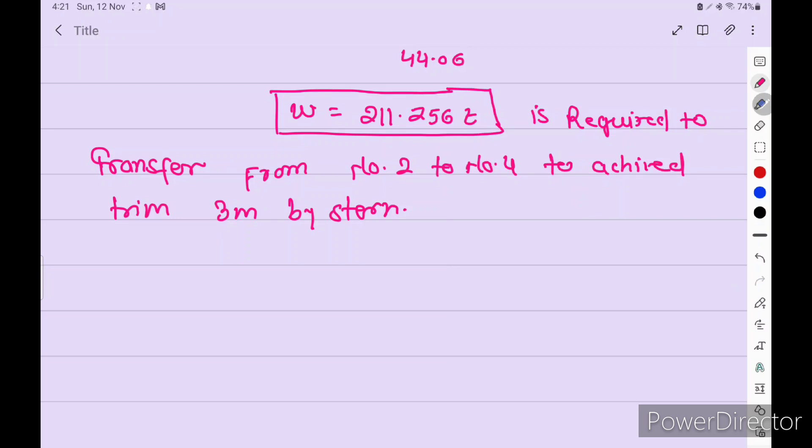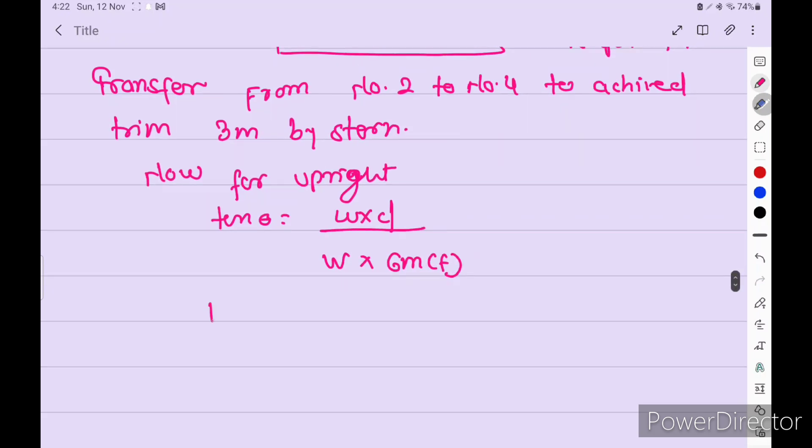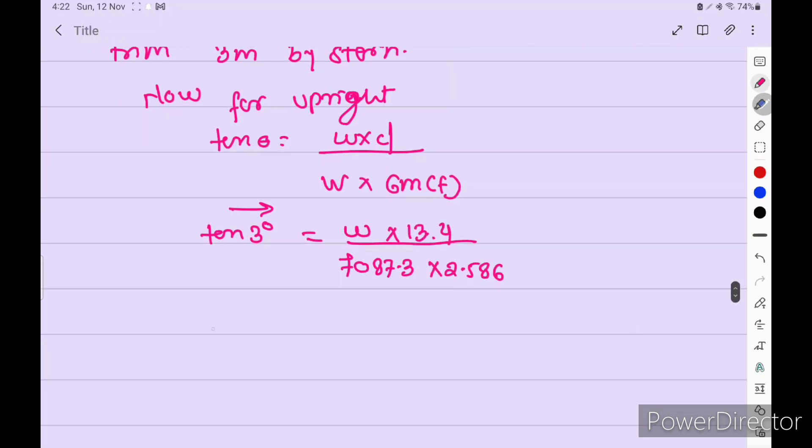Now for upright, formula is tan theta equals w into d upon capital W into GM fluid. Initial 3 degrees starboard, d is 13.4 given in the question, displacement given, GM fluid given in condition number 3. So w equals tan 3 degrees into 7087.3 into 2.586 divided by 13.4.